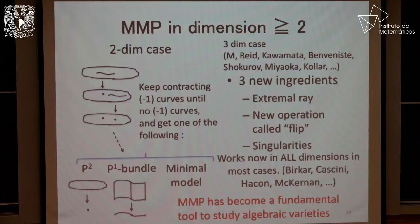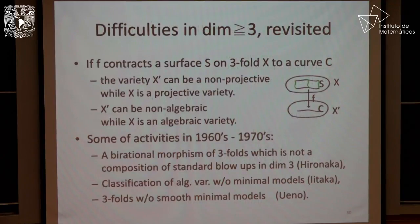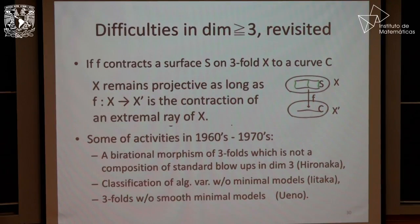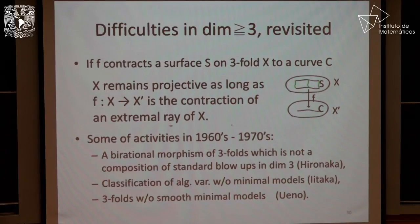So let's review how the difficulties I presented at the beginning are resolved. There was an example where I produced, by a seemingly good contraction, a non-projective variety. What's wrong with that? Well, you made the wrong choice of contraction. There is an extremal ray along which you can contract and get a projective variety — you may get a singularity, but you can keep projectivity. So X remains projective as long as you contract along the extremal ray.